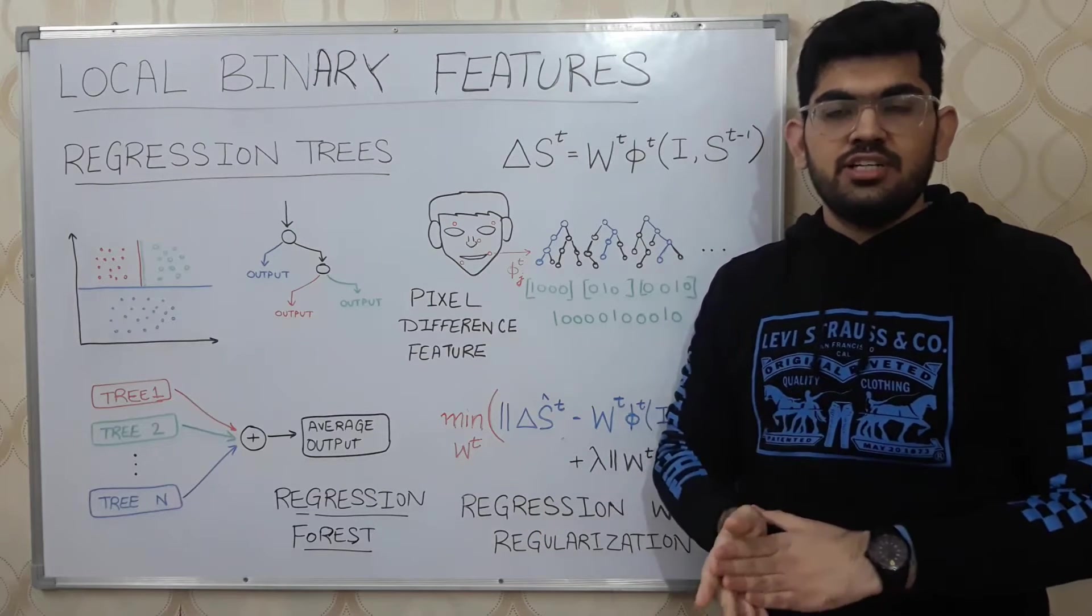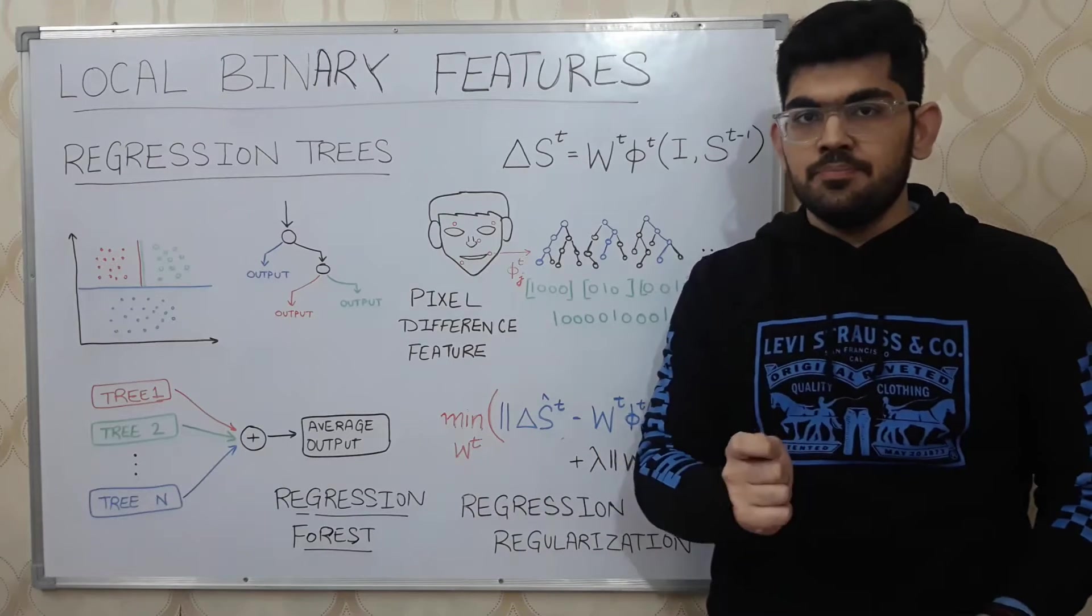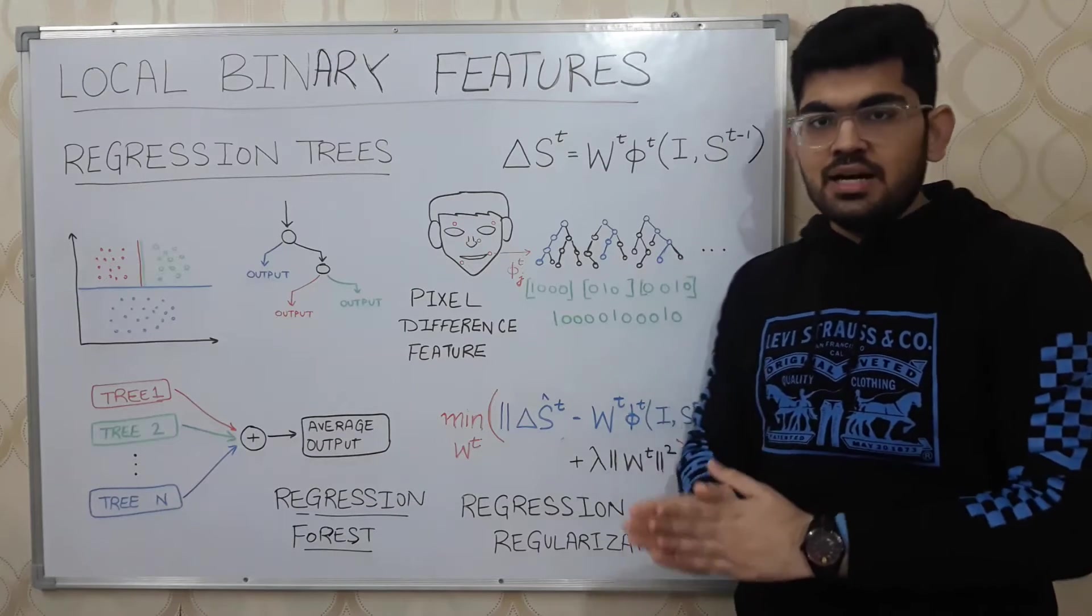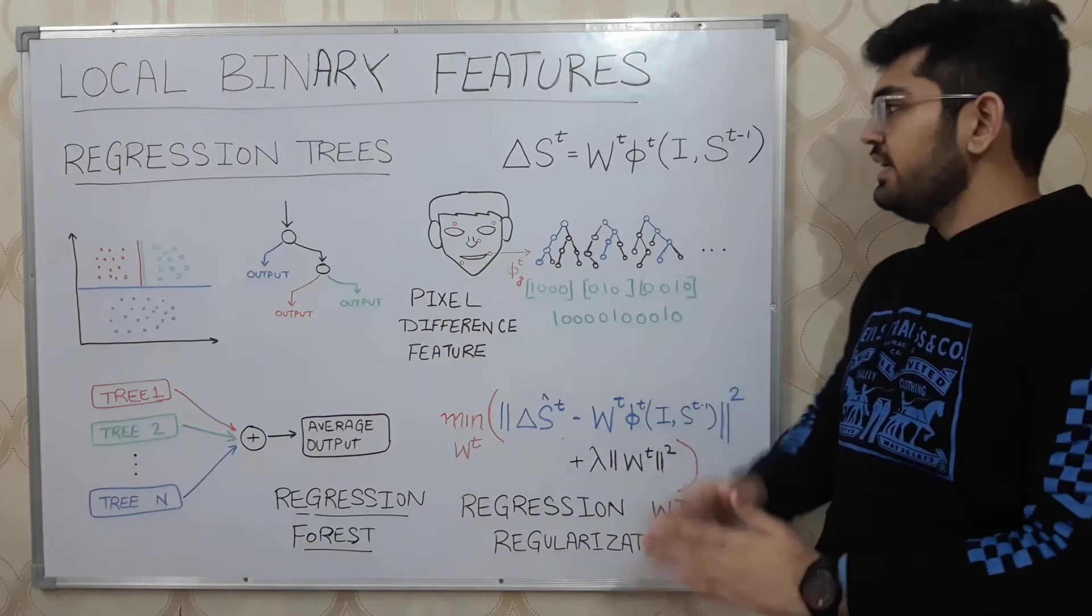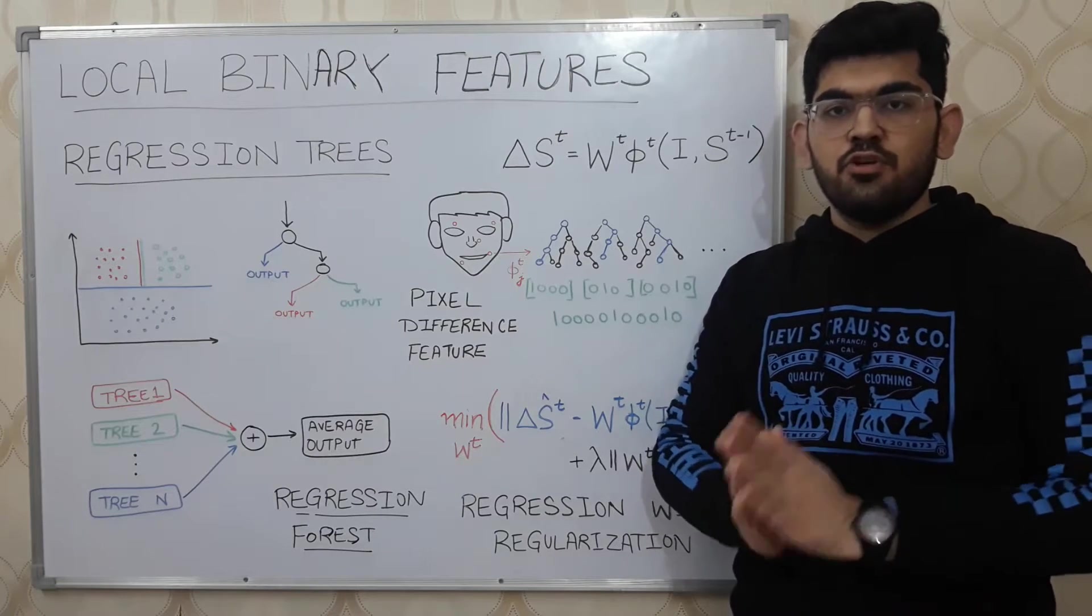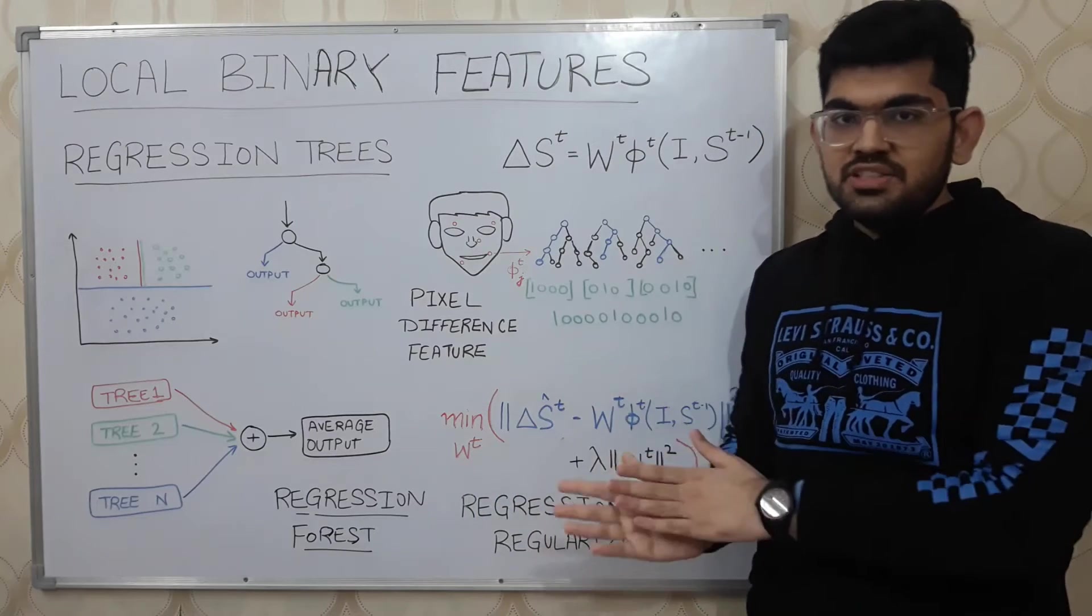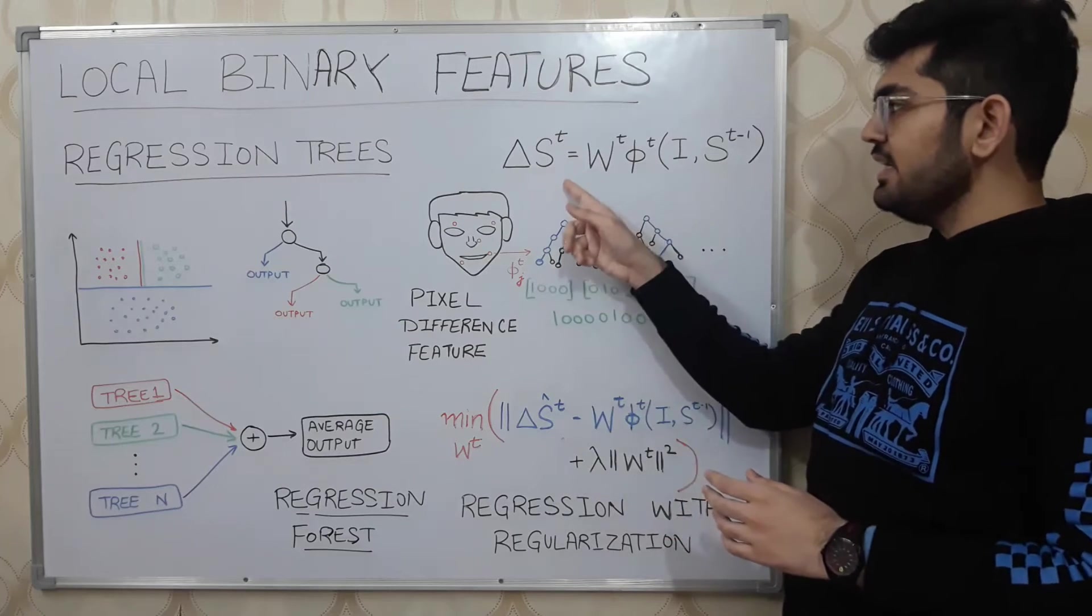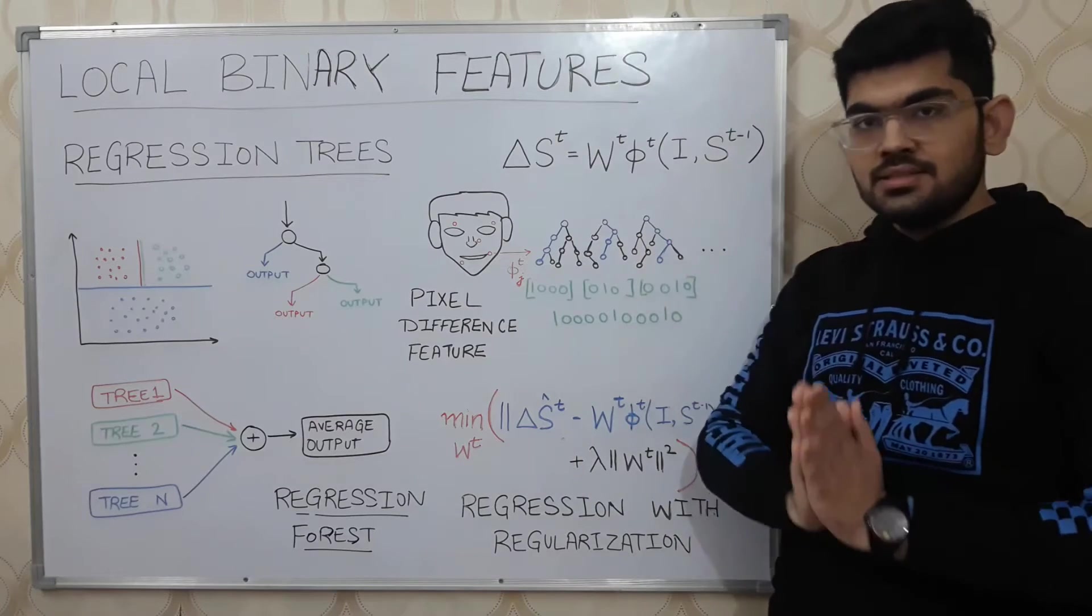Further iterations are denoted by S1, S2, S3 and any general iteration will be denoted by ST. Now given an image I and the previously detected landmarks ST-1, we take these values and do some computation over it and calculate the change required for that T-1th iteration to go to the T-th iteration. As we see, Delta ST is computed and using this Delta ST, we calculate ST that is equal to ST-1 plus Delta ST.